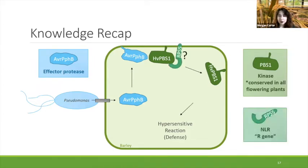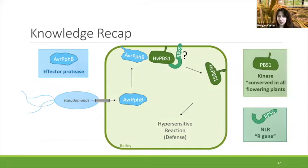We then looked for PBS1, the first candidate protein we expected might be involved. PBS1 is a member of a very conserved kinase family, so we were not surprised to find two PBS1 homologs in barley — HvPBS1-1 and HvPBS1-2 — which are closest to the Arabidopsis copy phylogenetically. Both have the AVR-PPHB cut site and both can be cleaved by AVR-PPHB when co-expressed in planta.